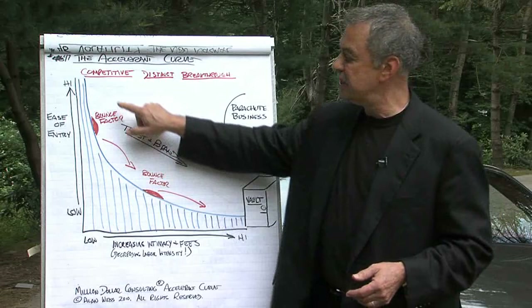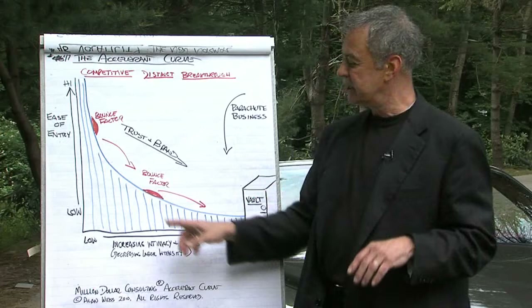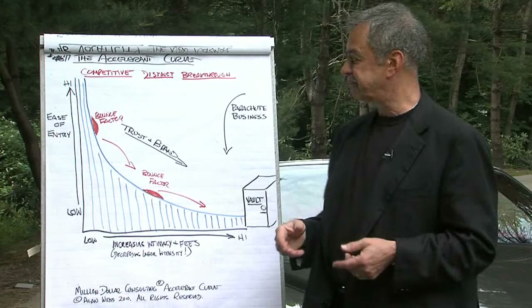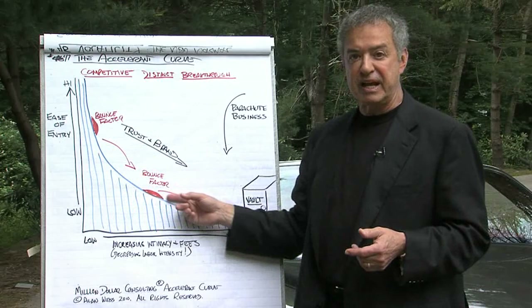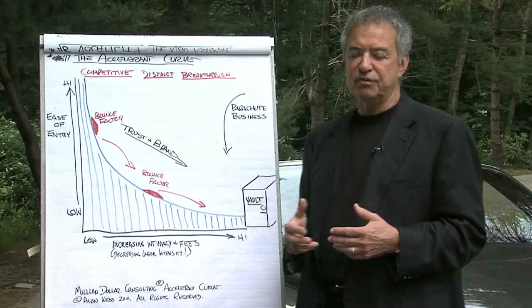What you want is for people to accelerate down this curve. As they begin to use you and it becomes easier and easier to use you, they move on to your next offering, your next offering, your next offering. You don't want any chasms in here — and what most of you have are chasms. You want to fill the accelerant curve so people can gradually do more and more business with you. In addition, this is accelerated by trust and your brand — it also builds trust and your brand. The more people trust you, or the stronger your brand, the more they will hurry down this accelerant curve.